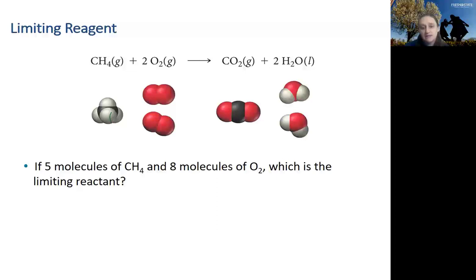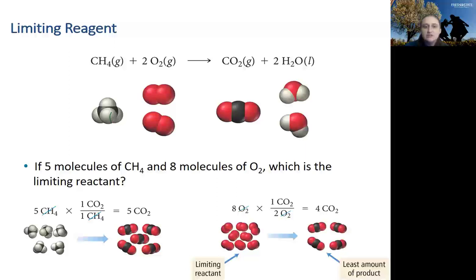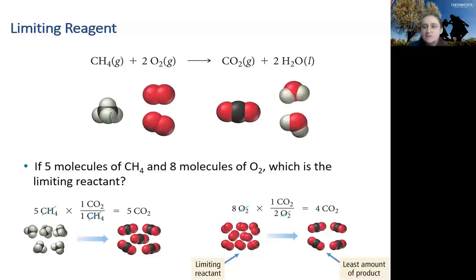From five methane molecules, I can make five CO₂ molecules using the ratio of reactants to products. For oxygen, I need two oxygen molecules for every one molecule of CO₂, so with eight molecules of oxygen I can only form four molecules of CO₂. Therefore, oxygen is the limiting reagent — or limiting reactant, those terms are used interchangeably — because it forms the least amount of product. Methane in this case is what would be in excess.